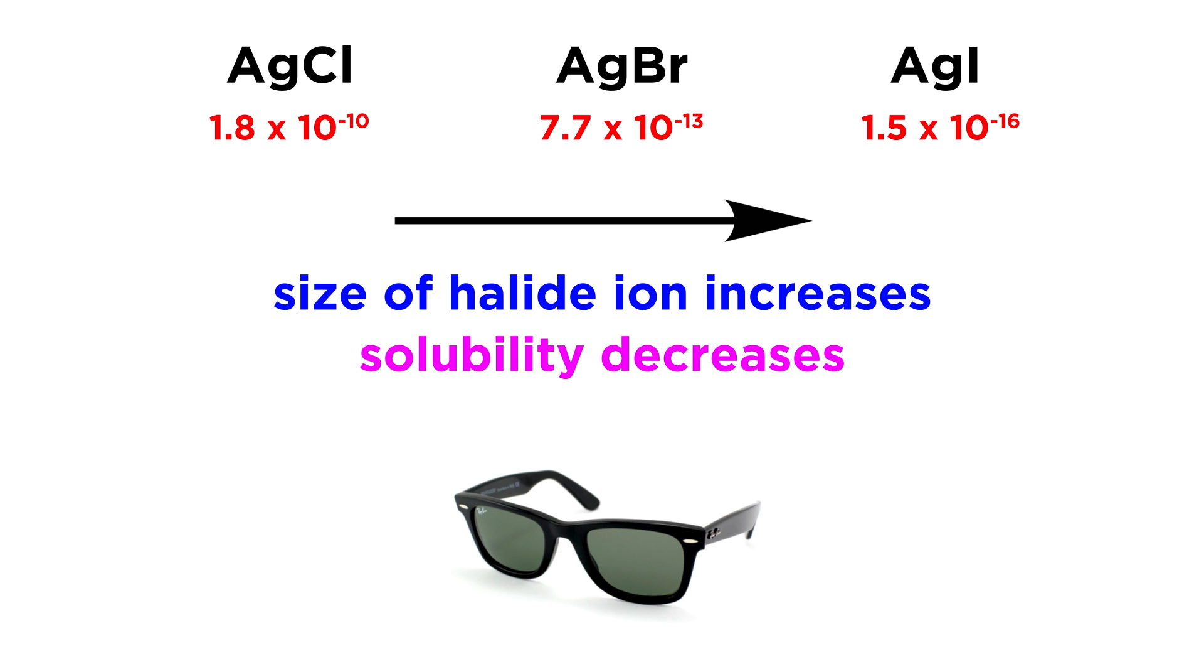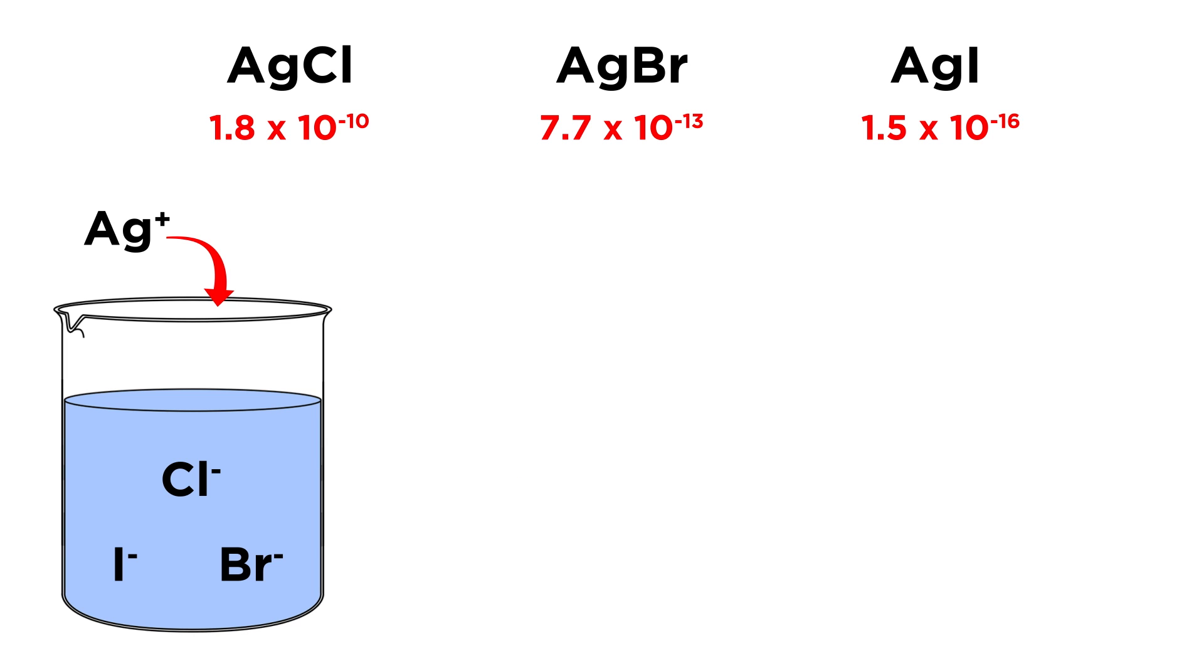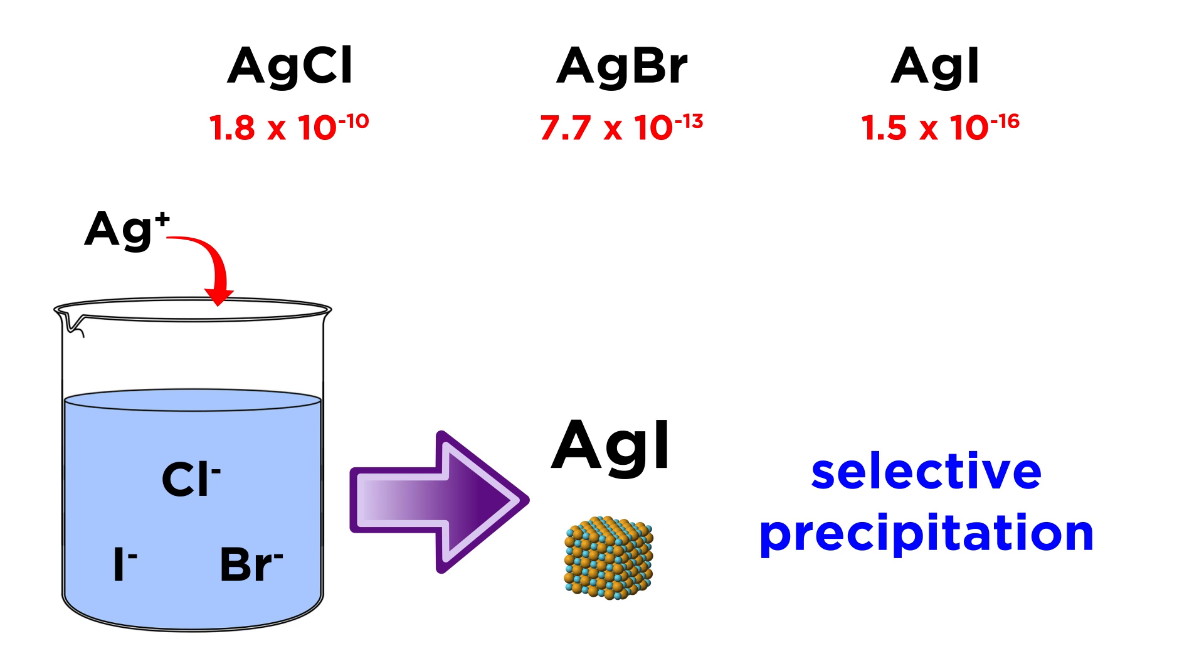There are technological applications for mixtures of these silver halides, such as photochromic eyeglass lenses. But it is interesting to note that if silver ions are added to a mixture of chloride, bromide, and iodide ions, the three silver halides will not precipitate in equal amounts. In fact, the precipitate that forms will be almost exclusively silver iodide. This is a phenomenon known as selective precipitation.